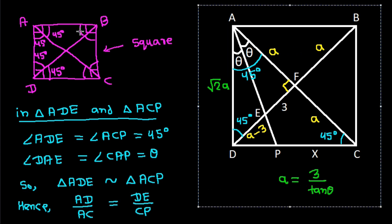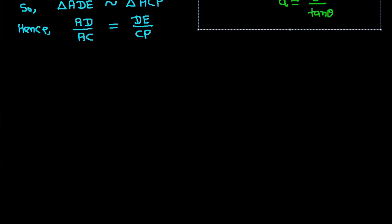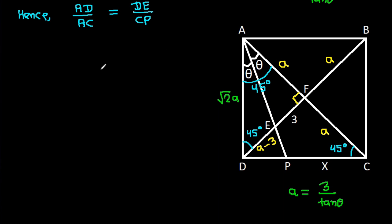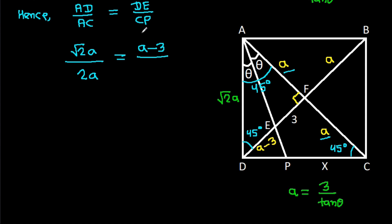AD is root 2 times A, and AC is A plus A which is 2A. So root 2A over 2A equals (A minus 3) over X. The A cancels, giving 1 over root 2 equals (A minus 3) over X.